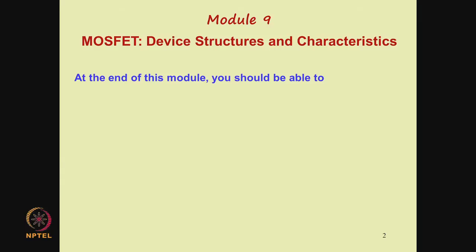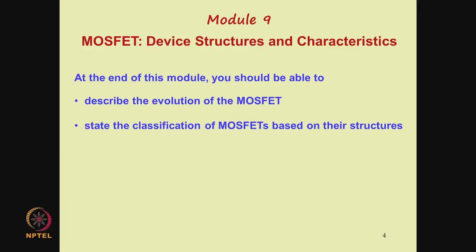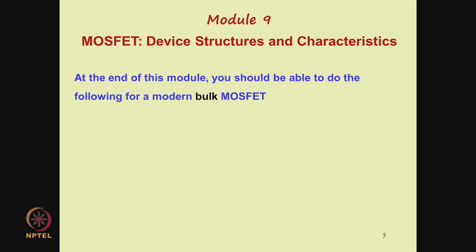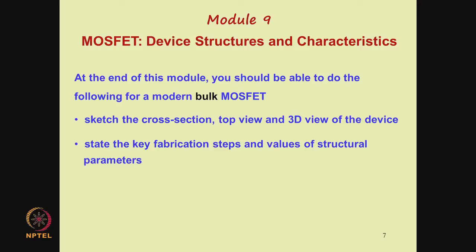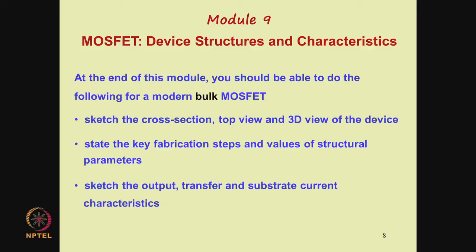In this module, we start a discussion of modeling of the MOSFET. At the end of this module, you should be able to describe the evolution of the MOSFET, state the classification of MOSFETs based on their structures, sketch the cross-section, top view and 3D view of the device, state the key fabrication steps and values of structural parameters, and sketch the output, transfer and substrate current characteristics.